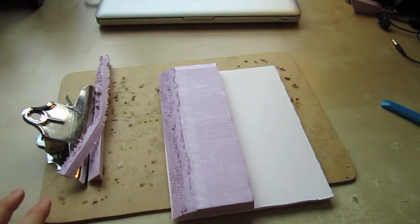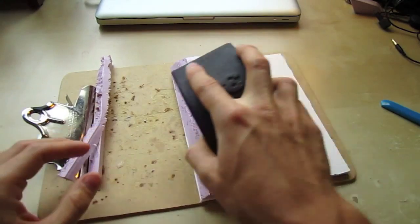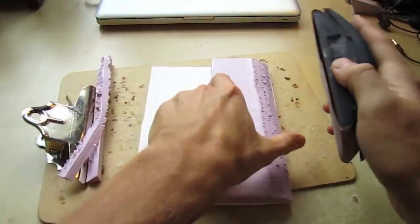So now what I do is I move on to sanding it down. I just have a little sanding block with 150 grit sandpaper, so then I just sand it down to make it nice and smooth.